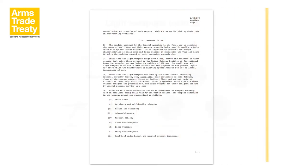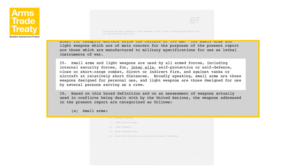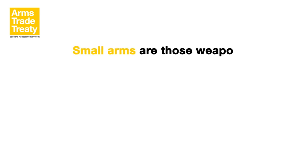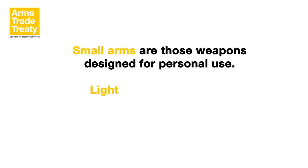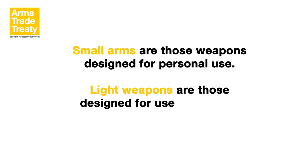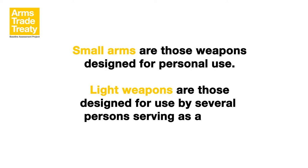The definition of SALW included in the ITI and the examples of weapon types listed are derived from the 1997 report of the UN Panel of Governmental Experts on Small Arms. The panel reported that, broadly speaking, small arms are those weapons designed for personal use, and light weapons are those designed for use by several persons serving as a crew. The types of arms classified as small arms and light weapons are the same as the indicative list in the ITI.